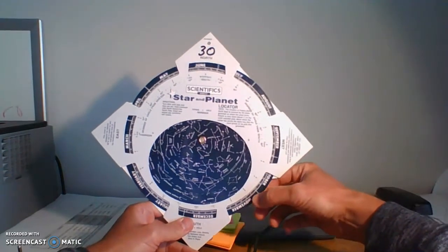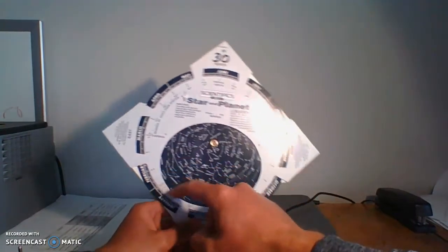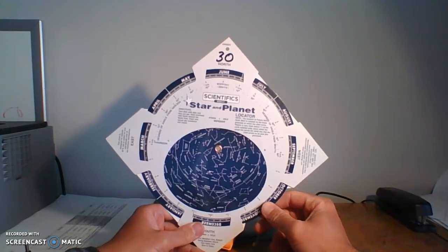And so when you line up the date with the time, what you see inside of here, inside this oval, that is going to be your night sky.